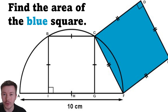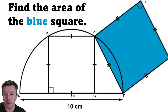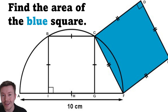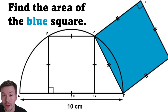Hi and welcome back to my channel. The problem this week is to find the area of this blue square, which is touching the bottom right of this semicircle at the point F, and is also touching the top right of a square inside our semicircle, which is touching two of the points on the circumference or the arc of that semicircle. Can you find the area of the blue square?